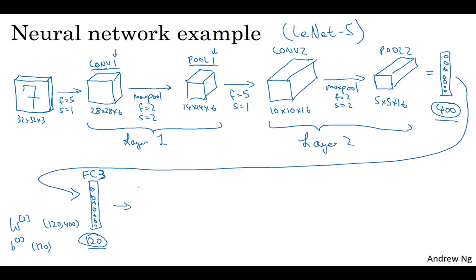And then lastly, let's take the 120 units and add another layer, this time a little bit smaller. Let's say we have 84 units here. We're going to call this fully connected layer 4. And finally, you now have 84 real numbers that you can feed to a softmax unit. And if you're trying to do handwritten digit recognition, you have to recognize is it the handwritten 0, 1, 2, and so on up to 9, then this would be a softmax with 10 outputs.